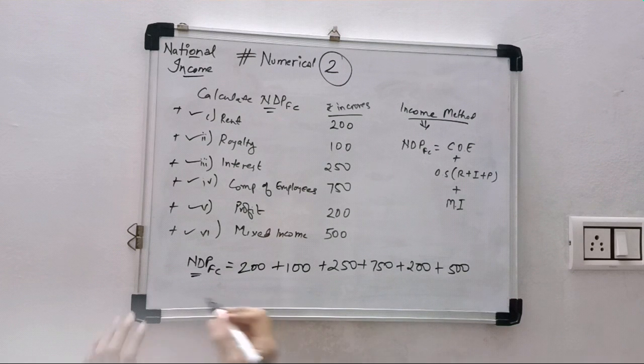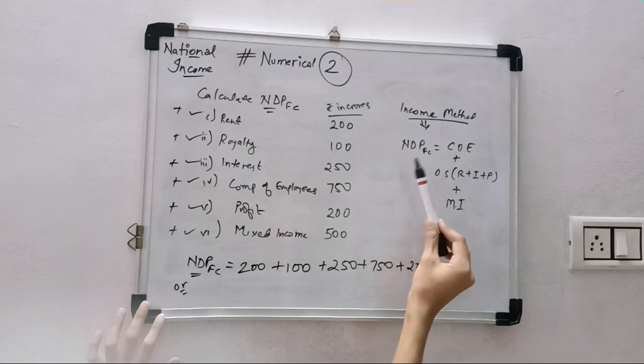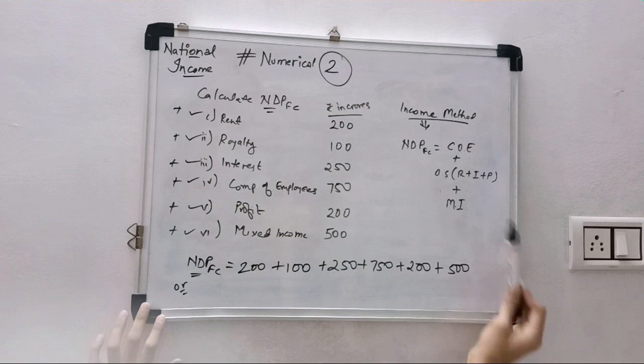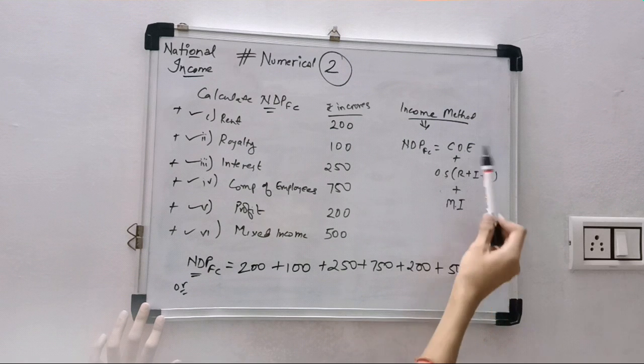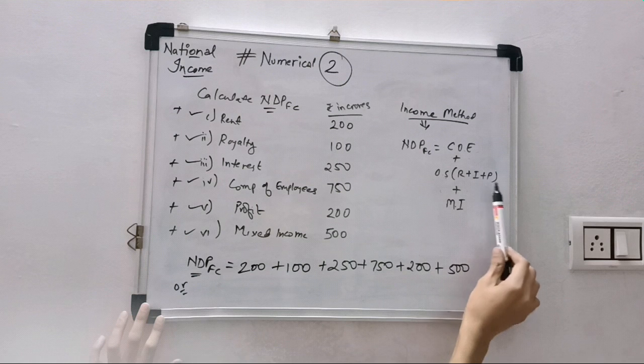NDPFC equals COE plus operating surplus plus mixed income. And then you have to write compensation of employees plus rent and royalty plus interest plus profit plus mixed income. You can write like this.